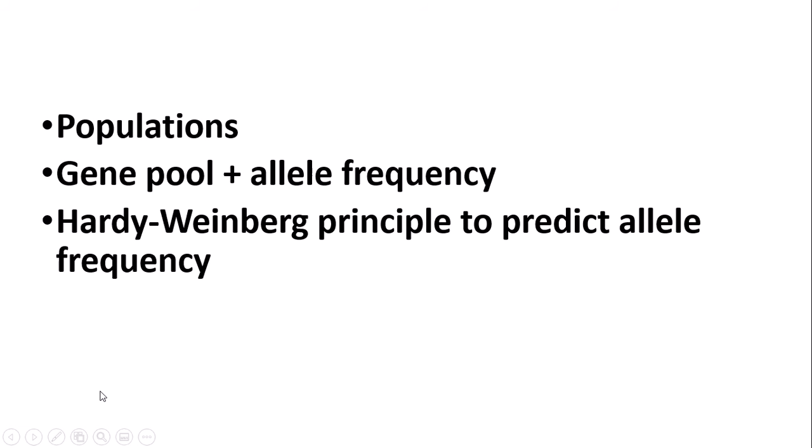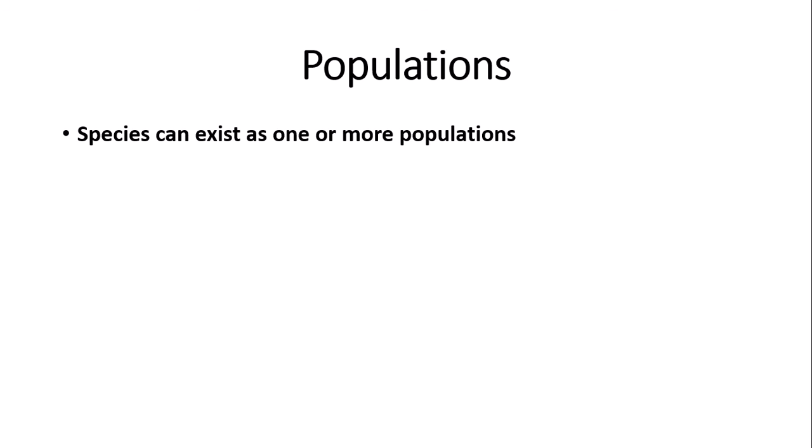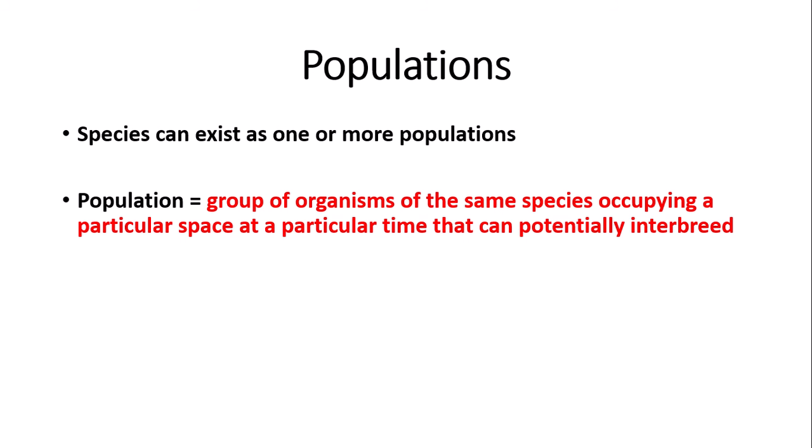So this is the content we're going to cover today: what is meant by a population, the concept of a gene pool and allele frequencies, and the Hardy-Weinberg principle to predict allele frequency. Starting with what is meant by a population — species can exist as one or more populations. For example, you can have a population of humans in London or a population of humans in Sheffield.